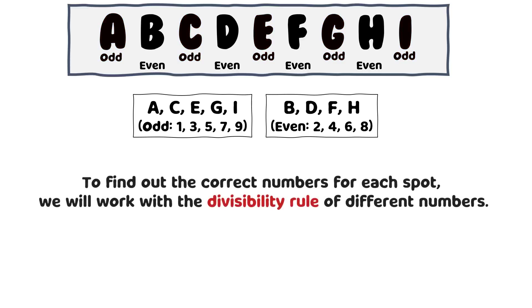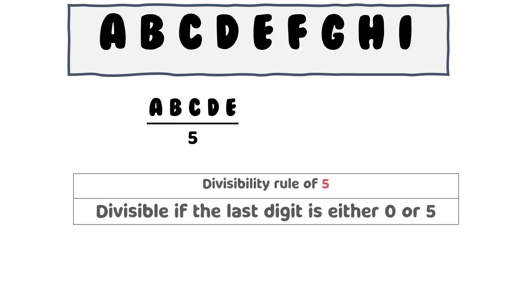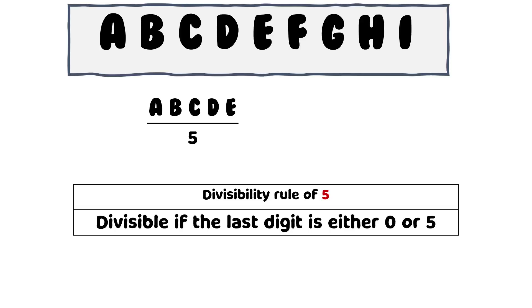To find out the correct numbers for each spot, we will work with the divisibility rule of different numbers. Let's start with the divisibility rule of 5. That says a number is divisible by 5 if the last digit is either 0 or 5. We don't have 0 in the actual given number and also the spot E is for an odd number. So the value of E is 5.